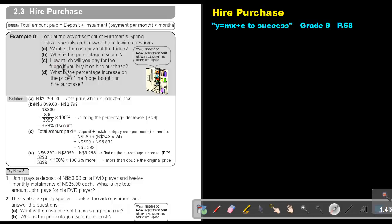Number C: How much will you pay for the fridge if you buy it on hire purchase? We use the formula. The deposit plus the installment of $243, multiplied by 24 months. Adding this up gives $6,392.